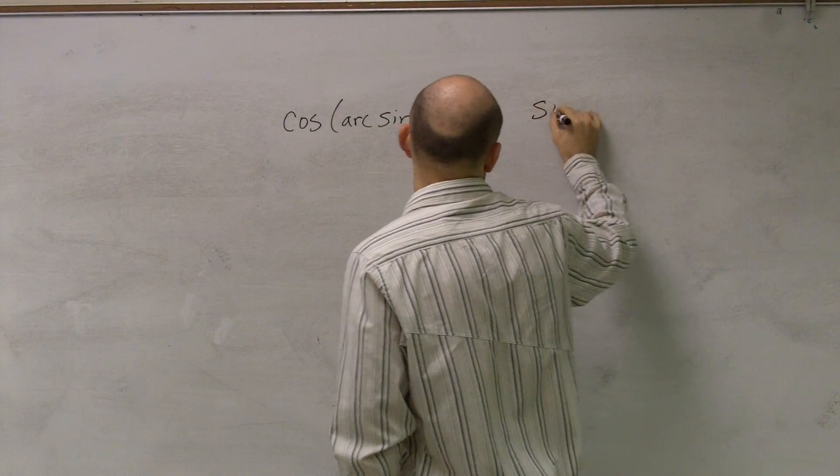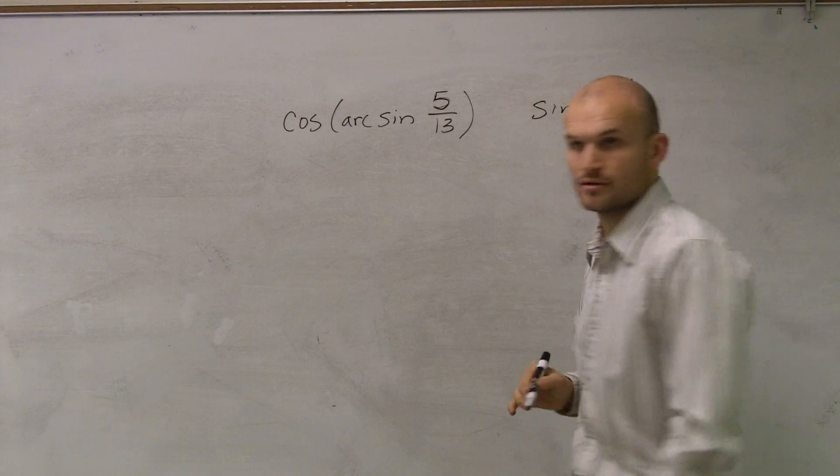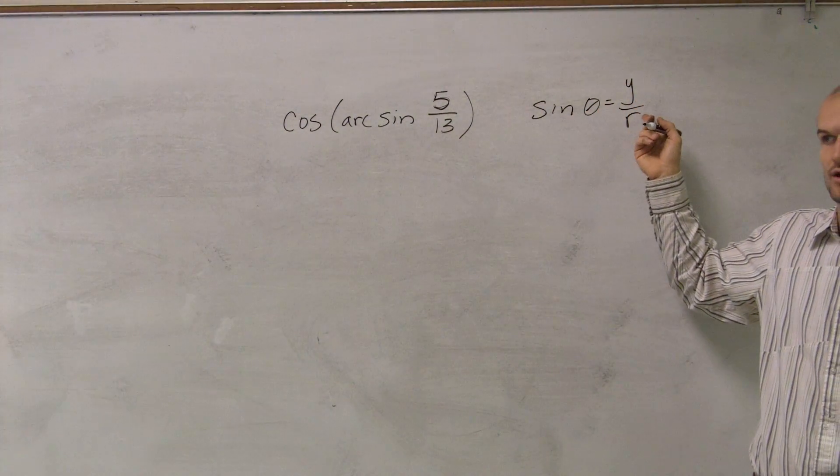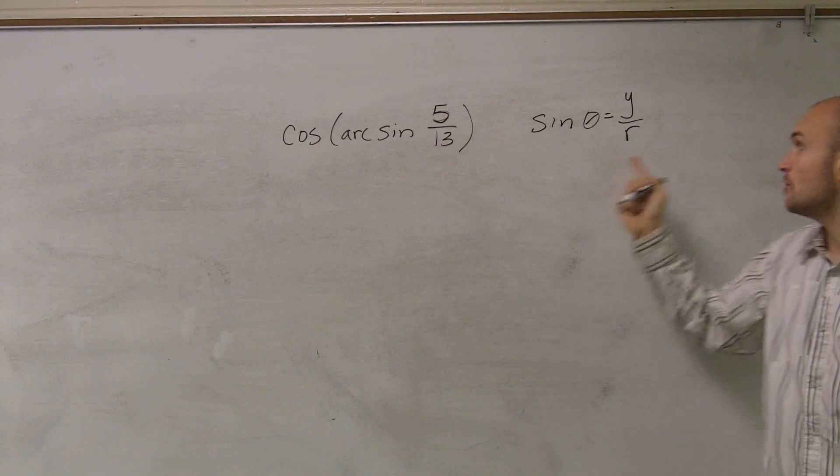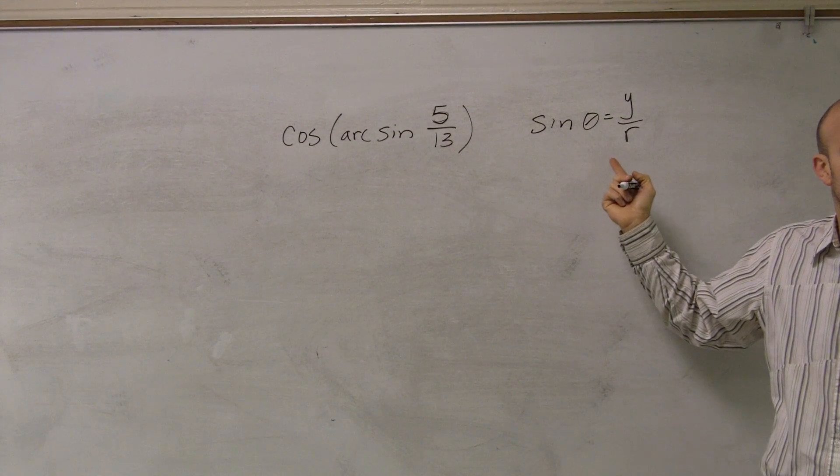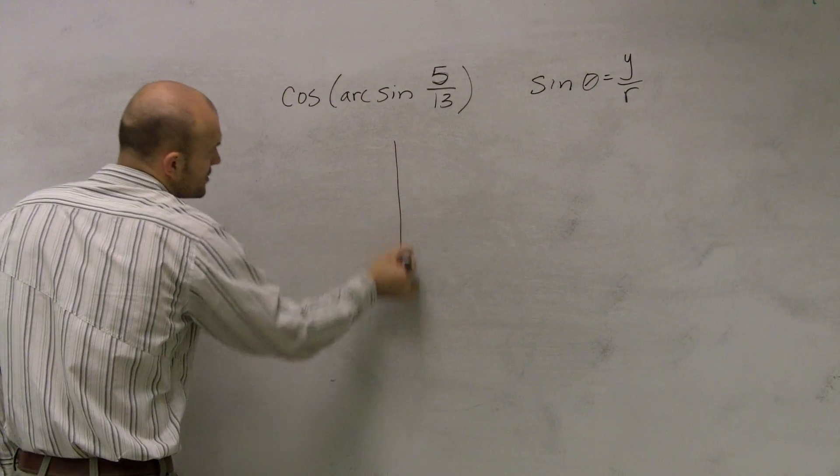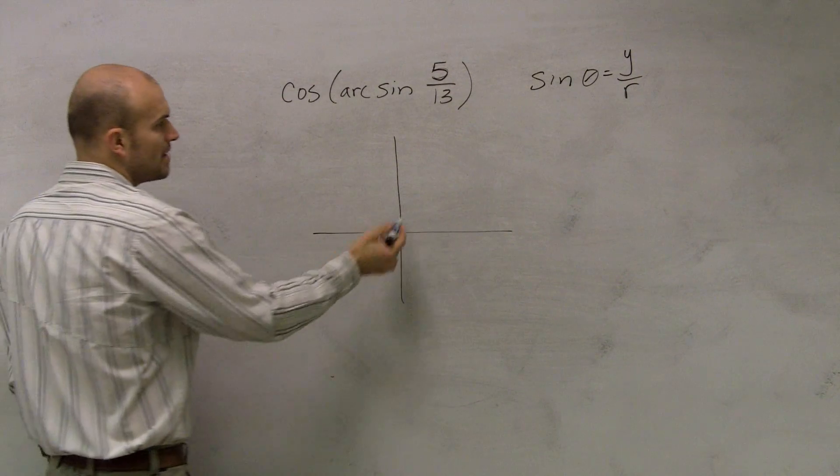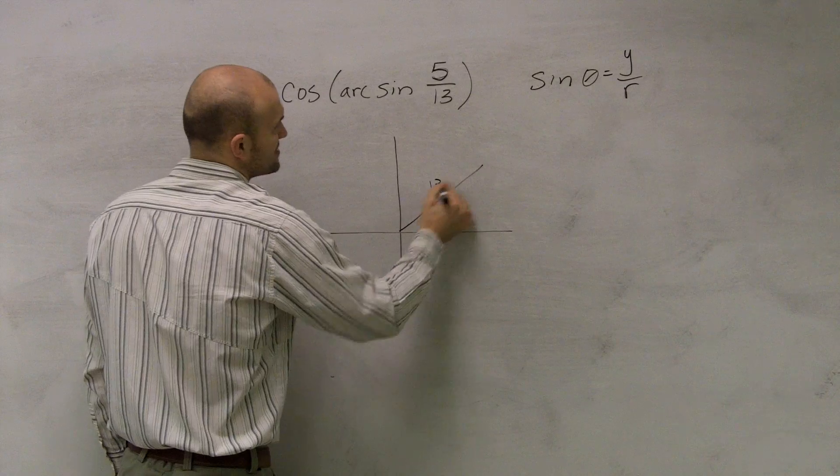We need to remember that sine of an angle theta equals y over r. For the unit circle, our r was 1, that's why we just did the y-coordinate. But now, when we have a point that's not on the unit circle, we have to include 13 as our radius, or as our hypotenuse. So as I create this triangle, I know that my hypotenuse is going to be 13.